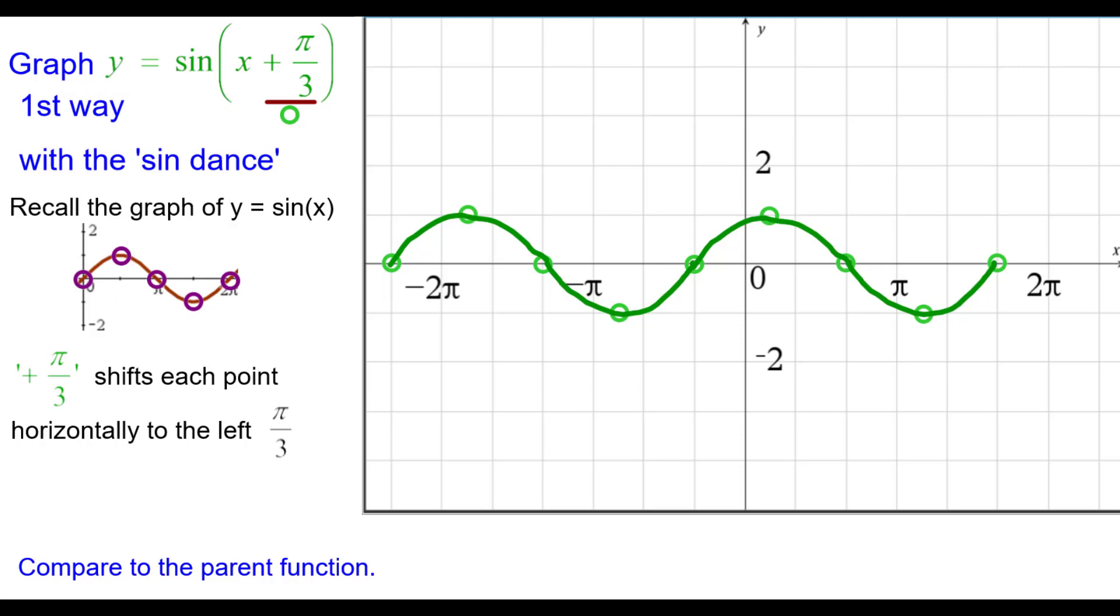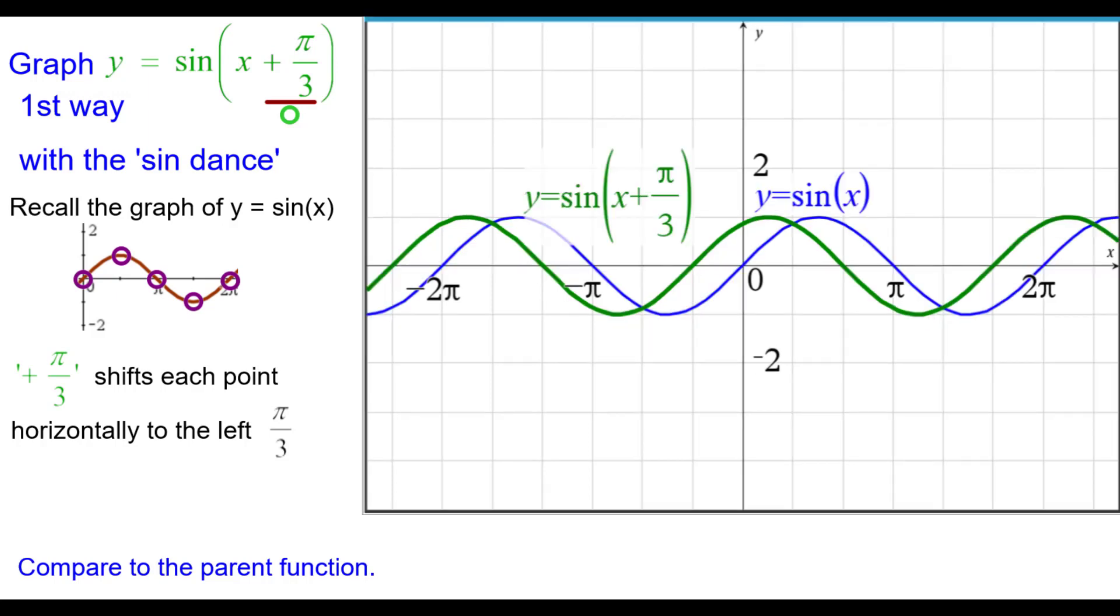And we'll compare it to the parent function. Parent function is in blue, our graph is in green. Each point is shifted to the left pi over 3 units from blue to green.